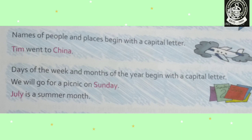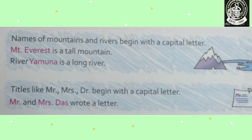Next, days of the week and months of the year begin with a capital letter. For example: 'We will go for a picnic on Sunday.' and 'July is a summer month.' Sunday is the name of a day and July is the name of a month, so these words will also start with capital letters. Names of mountains and rivers also begin with a capital letter.